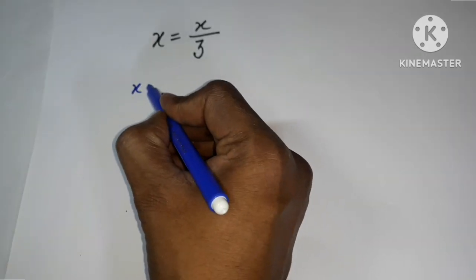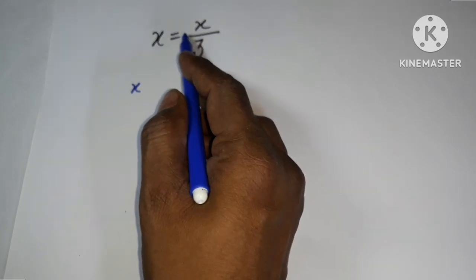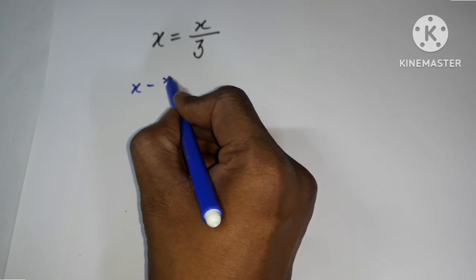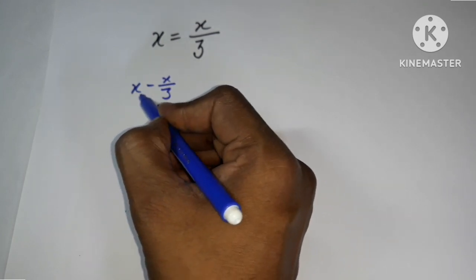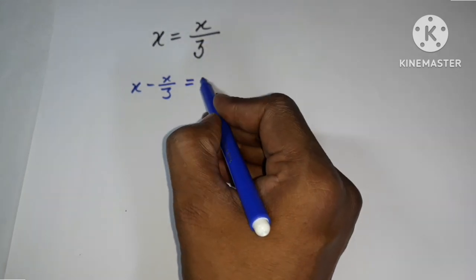This x by 3 should be on the left side. The plus sign is going to change to a negative sign when moved. So x minus x upon 3, and nothing remains on the right, so I can put here 0.